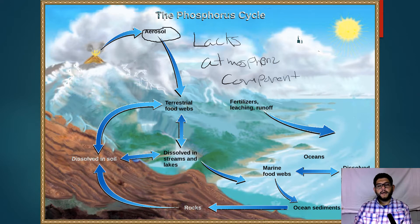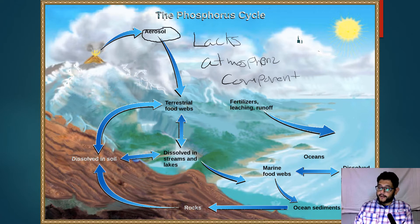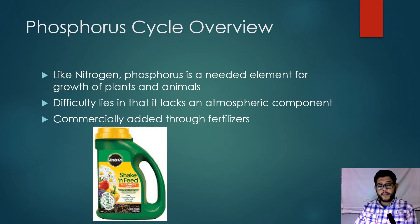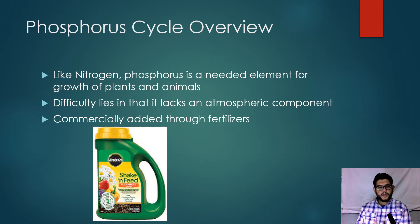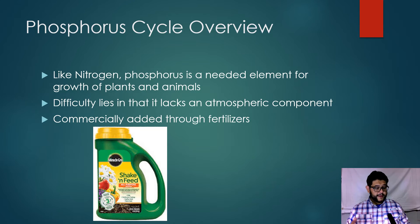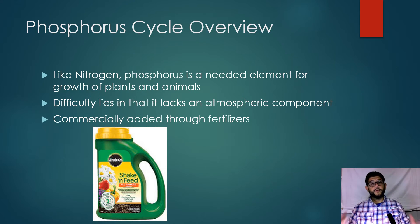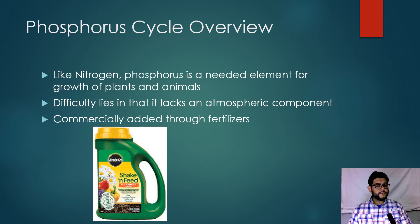That's what makes it so important — it becomes the limiting factor in many ecosystems, including aquatic ecosystems. Just like nitrogen, phosphorus is needed to grow plants and animals; we use it in our proteins and muscles. Because it has no atmospheric component, it moves very slowly through ecosystems, so we've had to commercially add it through fertilizer.